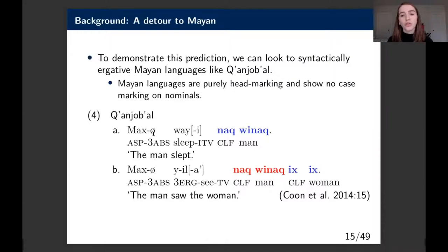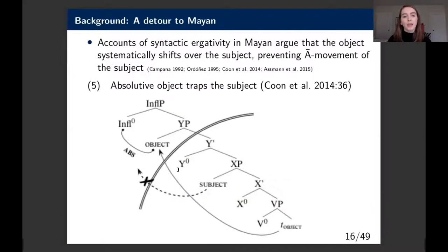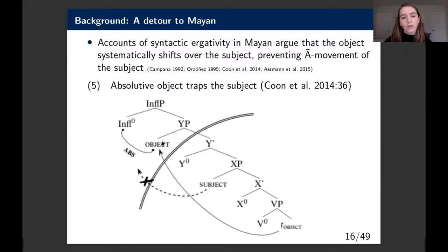To demonstrate this prediction, I'll zoom in on syntactically ergative Mayan languages such as Kaqchikel, which are purely head-marking and don't show case marking on nominals. The man appears in both absolutive and ergative position and is unmarked for case—we see ergative alignment only in the agreement paradigm. One account argues that the object systematically shifts over the subject, preventing further A-bar movement of the subject.